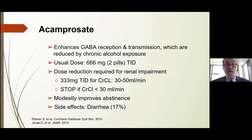Acamprosate enhances GABA reception and transmission, which is reduced by chronic alcohol exposure. The usual dose is 666 mg — two pills three times a day — which can be a compliance challenge. Importantly, dose reduction is required for renal impairment, and acamprosate cannot be used if creatinine clearance is less than 30 mL/min. The main side effect to watch for is diarrhea, occurring in just under one in five patients. These medications have modest but real benefit.